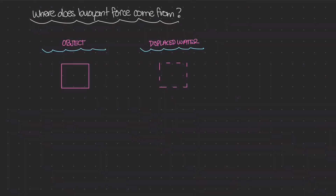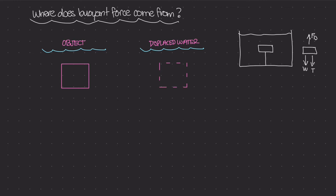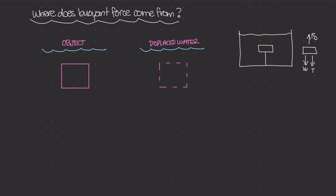In this video I want to talk about where buoyant force comes from. In a previous video I did an example where I had a container filled with water and inside there was a block tethered down to the bottom by a piece of string. When we drew the free body diagram of this block, we had a buoyant force acting up (F sub B), the weight of the block coming down, and the tension in the string coming down. A few people asked why we don't consider the weight of the water above and below the block — and they're right, there is weight acting on top of the block, but we did include that weight difference in the buoyant force.